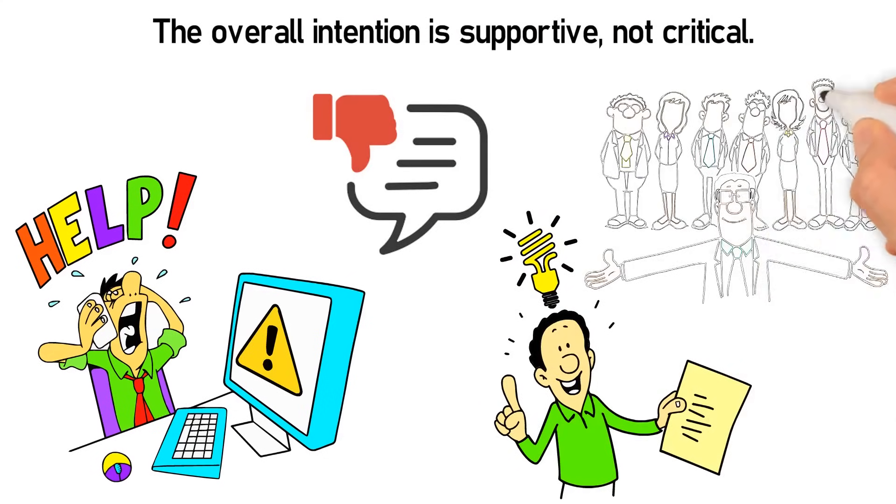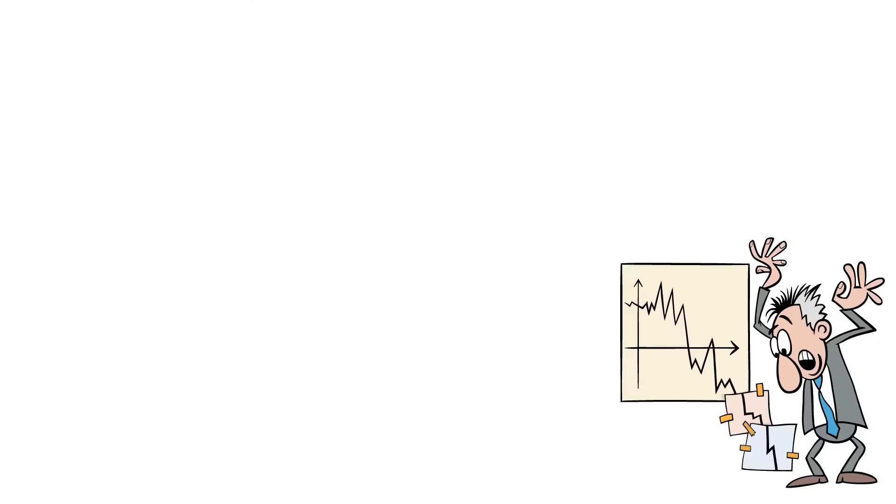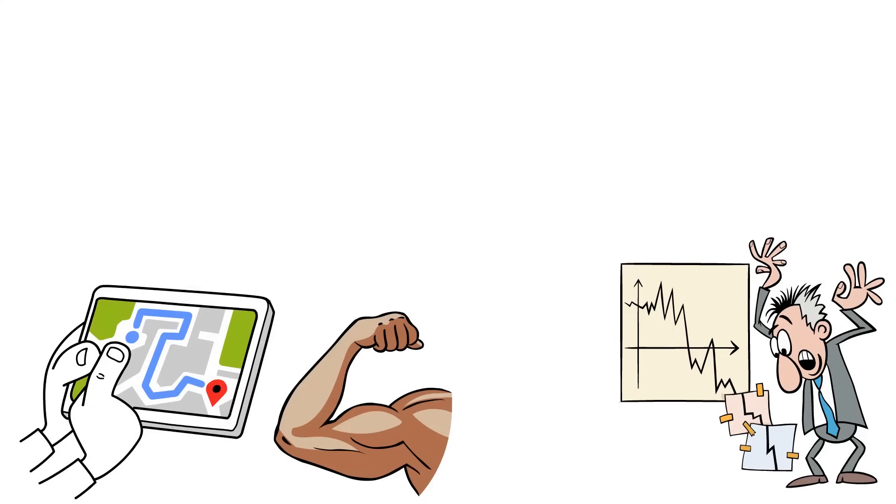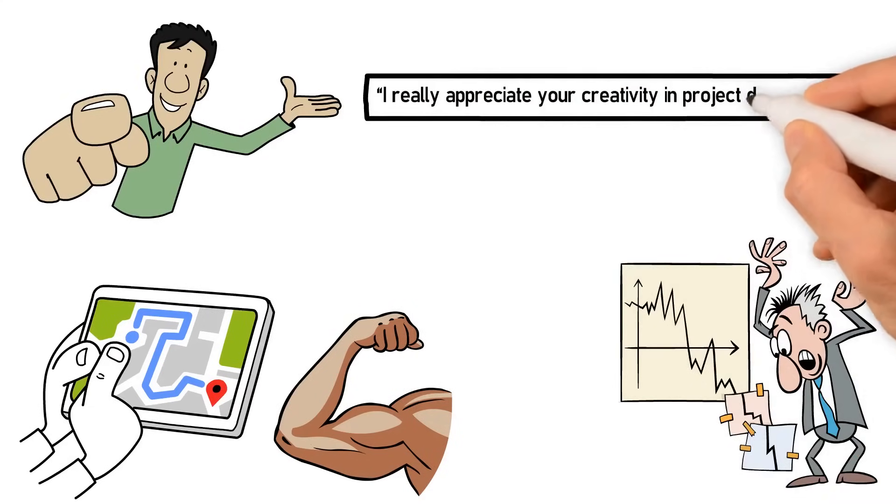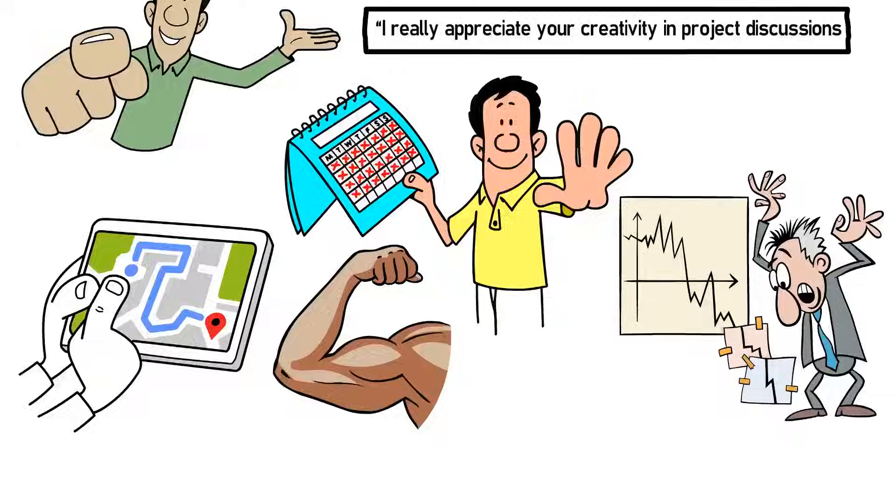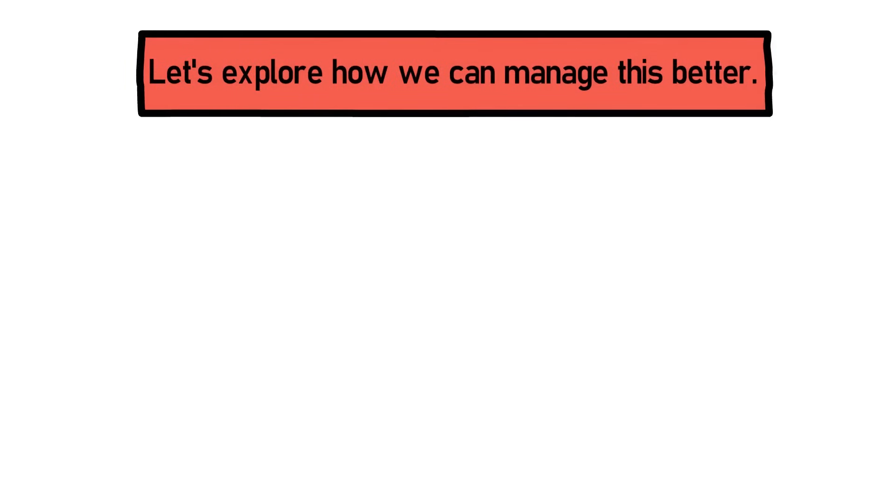Imagine a scenario where you need to address a team member's underperformance. Start by acknowledging their efforts or strengths, then discuss the specific areas where improvement is needed. For example, I really appreciate your creativity in project discussions, but I've noticed the last few deadlines have been missed. Let's explore how we can manage this better. I'm confident in your ability to turn this around.